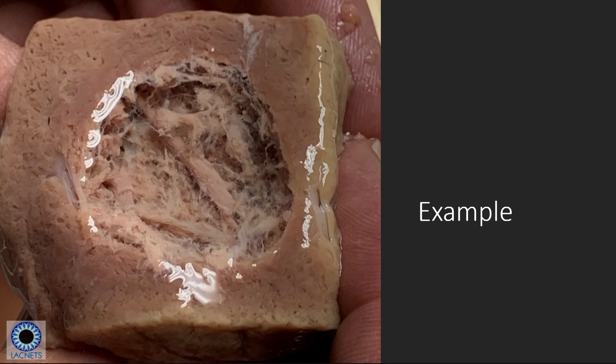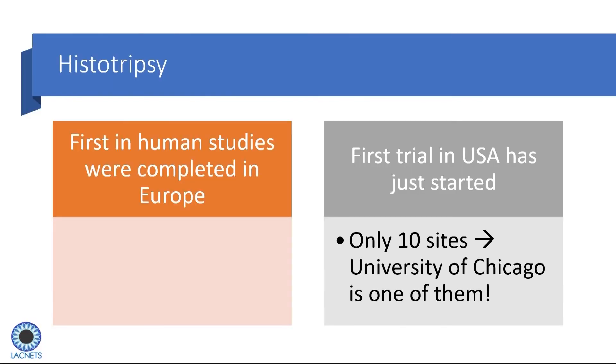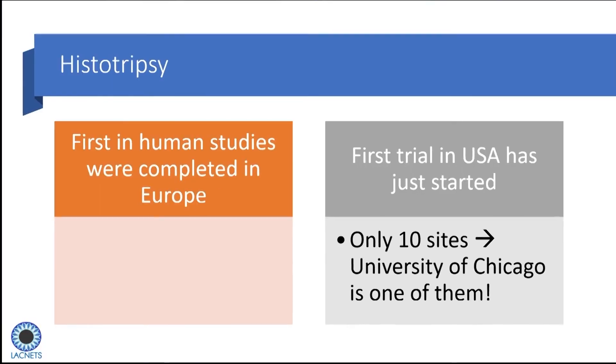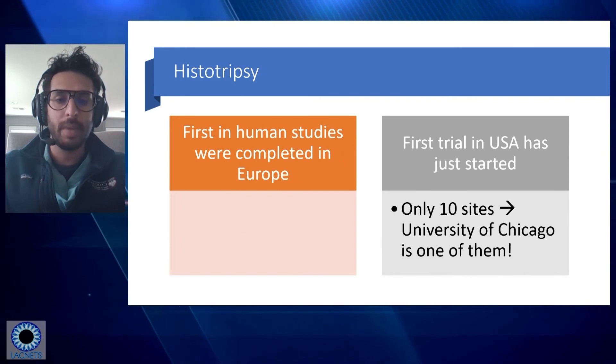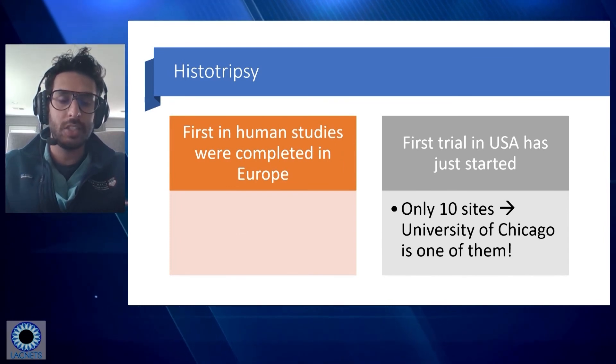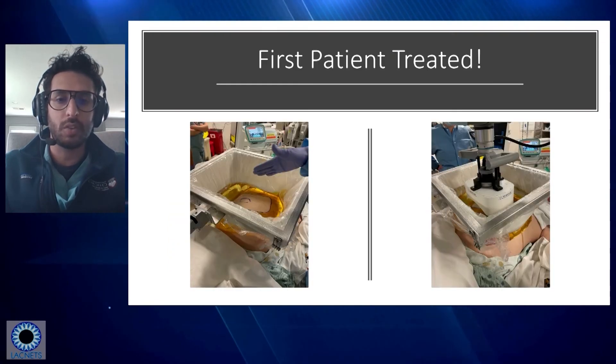Here's an example from a cadaver lab we performed. This is what cavitation looks like — it looks like an asteroid has hit this part of the liver and created a crater, all achieved non-invasively with nothing done to the patient from the inside. The first in-human studies were completed in Europe, and the first trial in the United States has just started. We are one of 10 sites fortunate to be part of this trial.